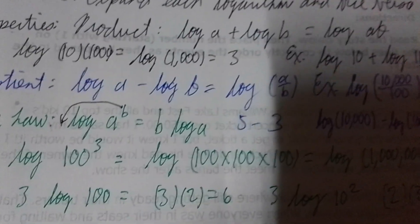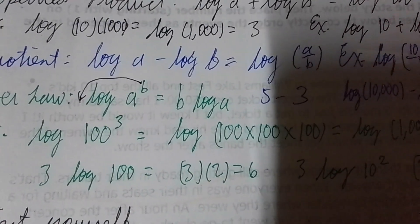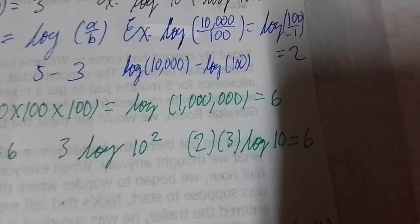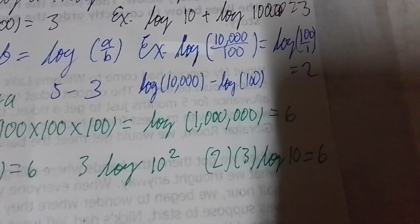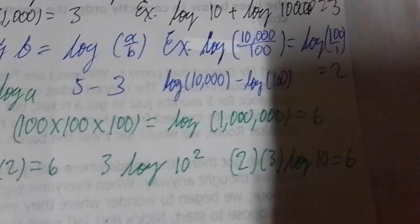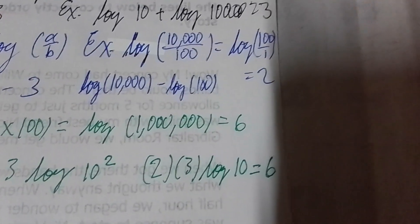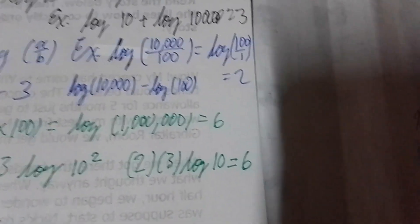You can also simplify by bringing the 3 down, then rewriting 100 as 10 squared. Applying the power law again, the 2 slides down, giving 2 times 3 times log base 10 of 10. Log base 10 of 10 is 1, and 2 times 3 gives you 6.